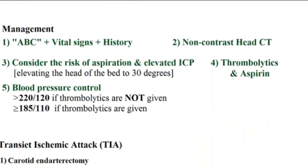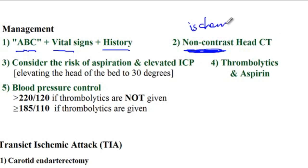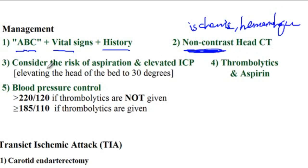In terms of stroke management, the first steps are to secure airway, breathing, and circulation, check vital signs and obtain history if possible. Then obtain a non-contrast head CT to determine whether it's an ischemic or hemorrhagic stroke. Using contrast dye would interfere with visualization of blood, which is why non-contrast is important. You should also consider the risk of aspiration and elevated intracranial pressure, both of which can be helped by elevating the head of the bed by 30 degrees.